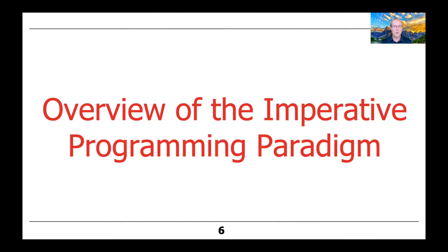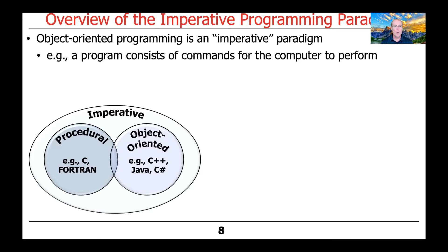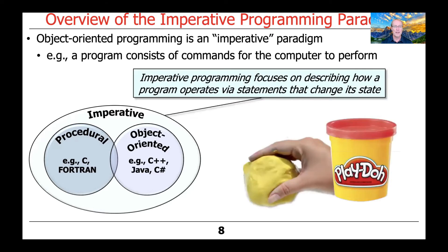Let's start off with a quick overview of the imperative programming paradigm. Object-oriented programming can be thought of as an imperative paradigm. What this means is that a program consists of commands that tell the computer what to do or what operations to perform. Imperative programming focuses largely on describing how a program operates via statements that change its state, or its values, or its fields.